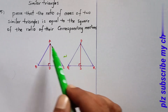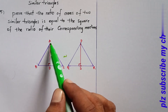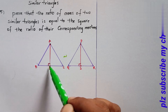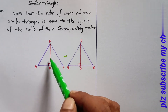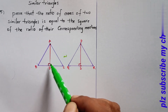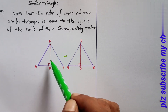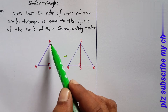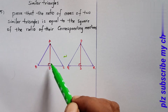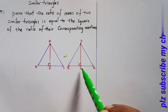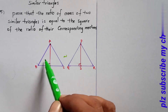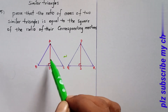The median connects a vertex to the midpoint of the opposite side. We need to show that the ratio of medians squared — AD square by PS square — equals the required ratio.